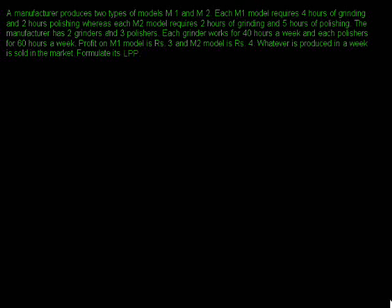First, we want to know the total hours required for model 1 and model 2. The manufacturer has 2 grinders and 3 polishers. Each grinder works for 40 hours a week and each polisher for 60 hours a week. The profit of model 1 is 3 and model 2 is 4.